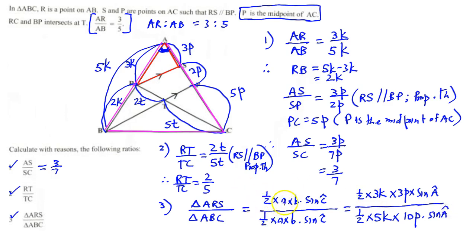Okay, just a quick recap. Half times A times B times sine C. That's the area formula. And now that would equal to, so half and half cancels. K and K cancels. P and P cancels. Sine A and sine A cancels. So we're left with 3 times 3 is 9 over 5 times 10 is 50. So the area of triangle ARS over triangle ABC is 9 over 50.